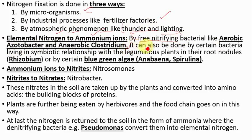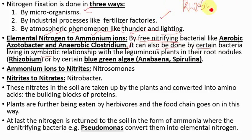These free-living nitrifying bacteria convert elemental nitrogen to ammonium ions. This can also be done by bacteria that live in a symbiotic relationship — the Rhizobium, which live in the root nodules of leguminous plants, also perform nitrogen fixation. Nitrogen fixation is also done by blue-green algae like Anabaena and Spirulina. Please remember their names. So the elemental nitrogen is now converted into ammonium ions.